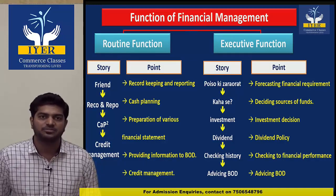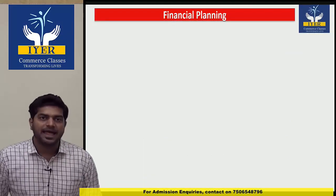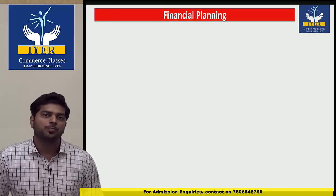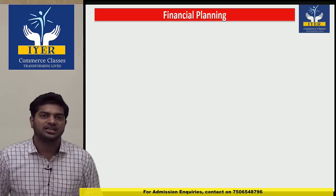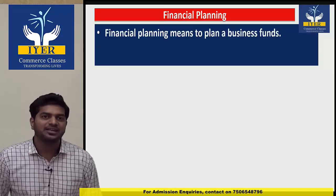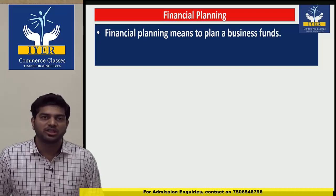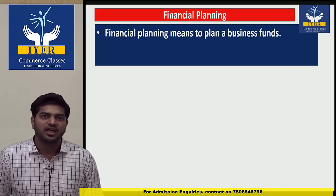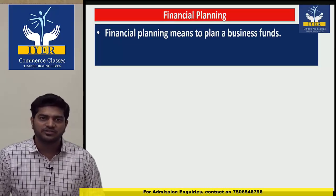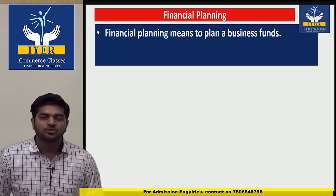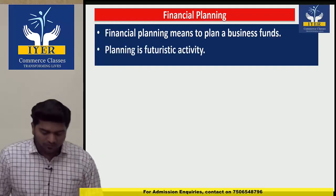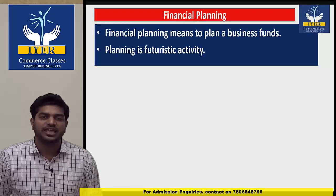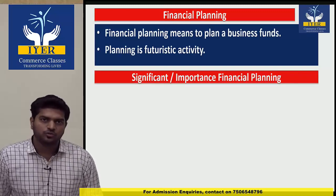Our next topic is financial planning. In a company, there are three levels of management: top level, middle level, and lower level. Planning rights always belong to top level. Financial planning means to plan business funds — जैसे अगर हमारे पास 100 rupees हैं और 2 दिन चलाने हैं, तो हम plan करते हैं कि कहाँ-कहाँ खर्च करें। Planning is always the first step. Planning is a futuristic activity — हम future के लिए plan करते हैं।